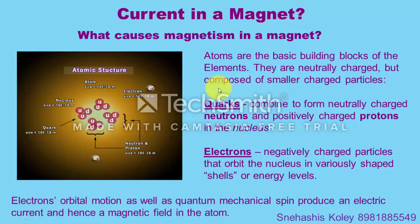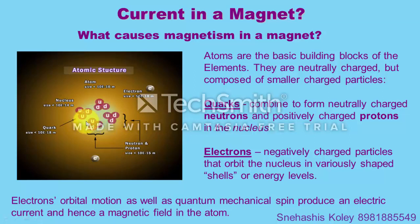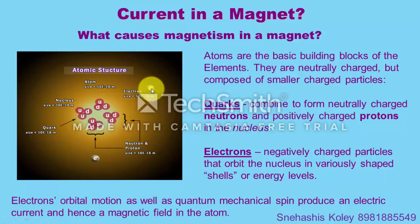What causes magnetism in a magnet? Why are some materials magnetic and others non-magnetic? In an atom there are three basic particles: protons, neutrons and electrons. Among them, protons and neutrons are made up of quarks. In the quark configuration of a neutron, one up and two down quarks are combined. In a proton, two up quarks and one down quark combine. Neutrons are electrically neutral and protons are electrically positively charged. The electron revolves around the nucleus, which is composed of neutrons and protons in the center region of the atom.